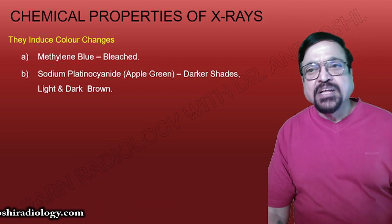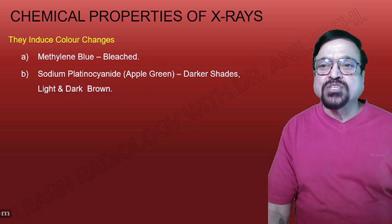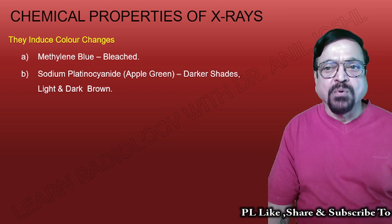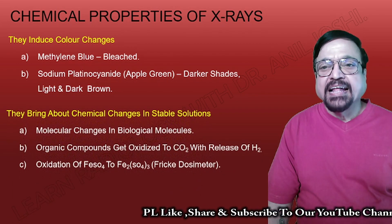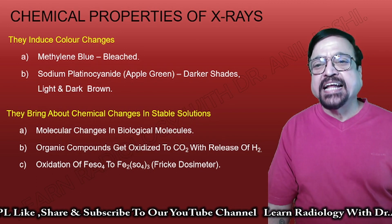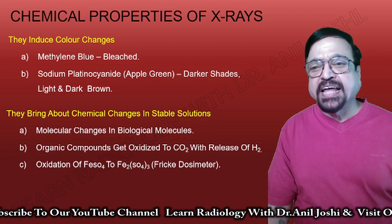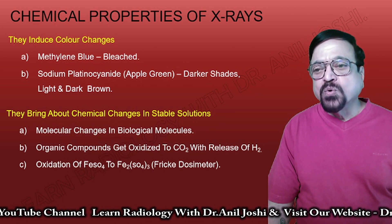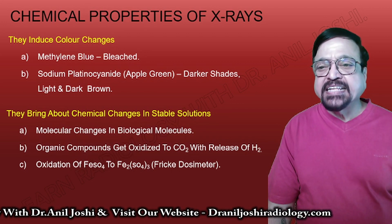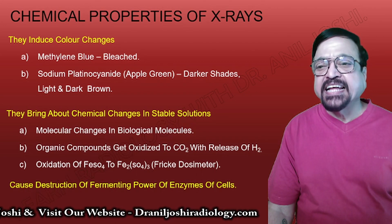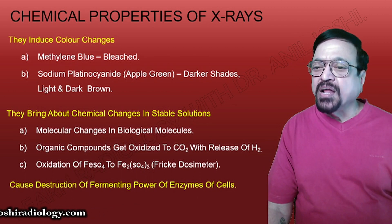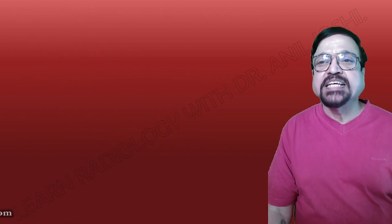The chemical properties of X-rays include the ability to induce color changes — in methylene blue, sodium platinum cyanide (apple green), and producing lighter or darker brown shades. They bring about chemical changes in stable solutions, causing molecular changes in biological molecules. Organic compounds get ionized to release CO₂ with hydrogen. Oxidation of ferrous sulfate is used in the Fricke dosimeter. X-rays can also cause destruction of the fermenting power of enzymes within cells.